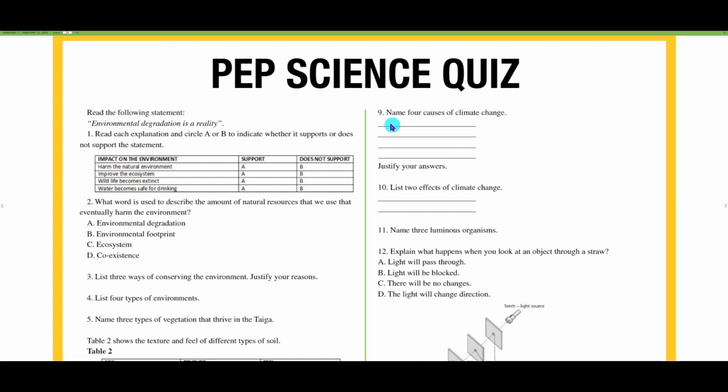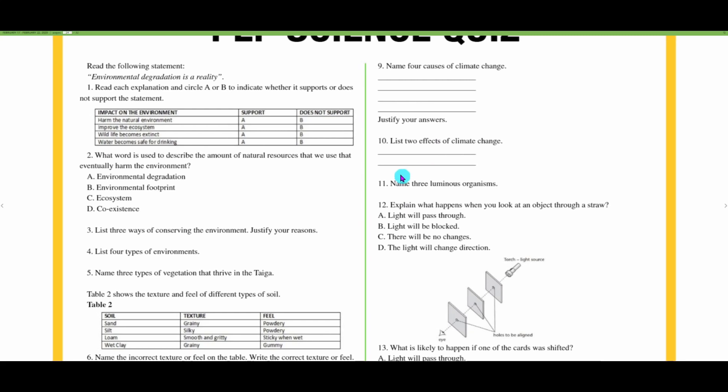In winter, it is tilted farther away from the sun, so winters are going to be colder. Then we have increases in greenhouse gases, for example, destruction of forests would cause more carbon dioxide to stay in the atmosphere. Number ten: list two effects of climate change. We can have global warming, rising sea levels, droughts, more severe weather conditions such as hurricanes, storms, and tornadoes.